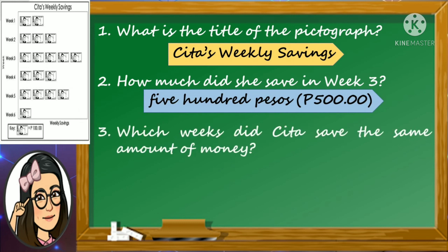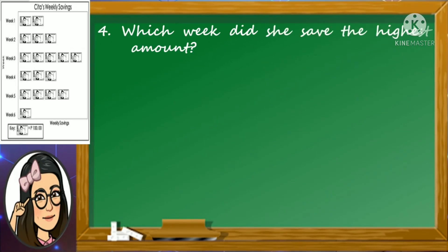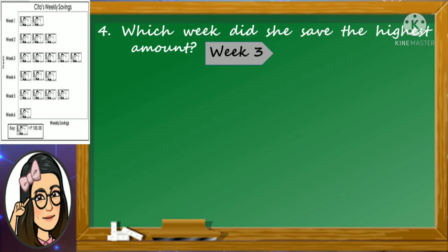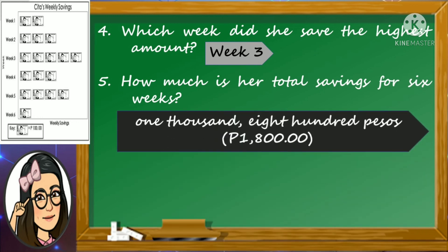Number three: which weeks did Sita save the same amount of money? Very good! Sita saved the same amount of money on weeks two and week four. Number four: which week did she save the highest amount? Excellent! Sita saved the highest amount on week three. Number five: how much is her total savings for six weeks? Good job! Sita has saved 1,800 pesos in all.